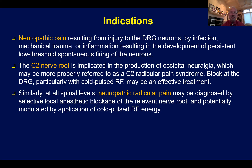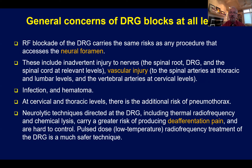The C2 nerve root is implicated in the production of occipital neuralgia — pain in the back of the head — which may be more poorly referred as a C2 radicular type pain syndrome. At all spinal levels, neuropathic radicular pain may be diagnosed by a selective local anesthetic injection of the relevant nerve root, primarily modulated by local anesthetic, and in selective cases by using pulsed radio frequency treatment, not continuous radio frequency neurotomy.